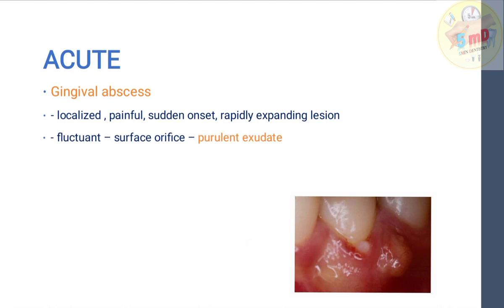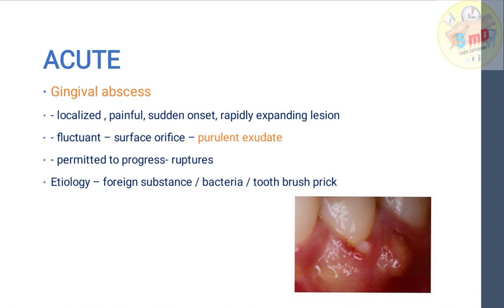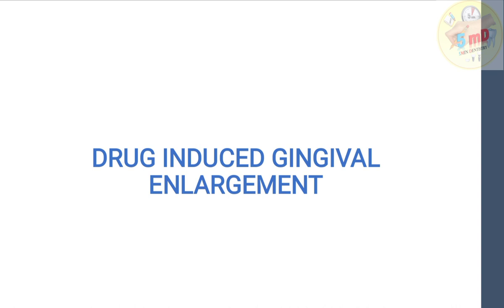The gingival abscess can be fluctuant and has a surface orifice with purulent exudate — pus discharge will be present. If permitted to progress, it will rupture on its own. It is different from periapical and periodontal abscess. The etiology is usually a foreign substance, bacteria, or toothpick — a fish bone or food particle lodged into the gingiva causing inflammation.